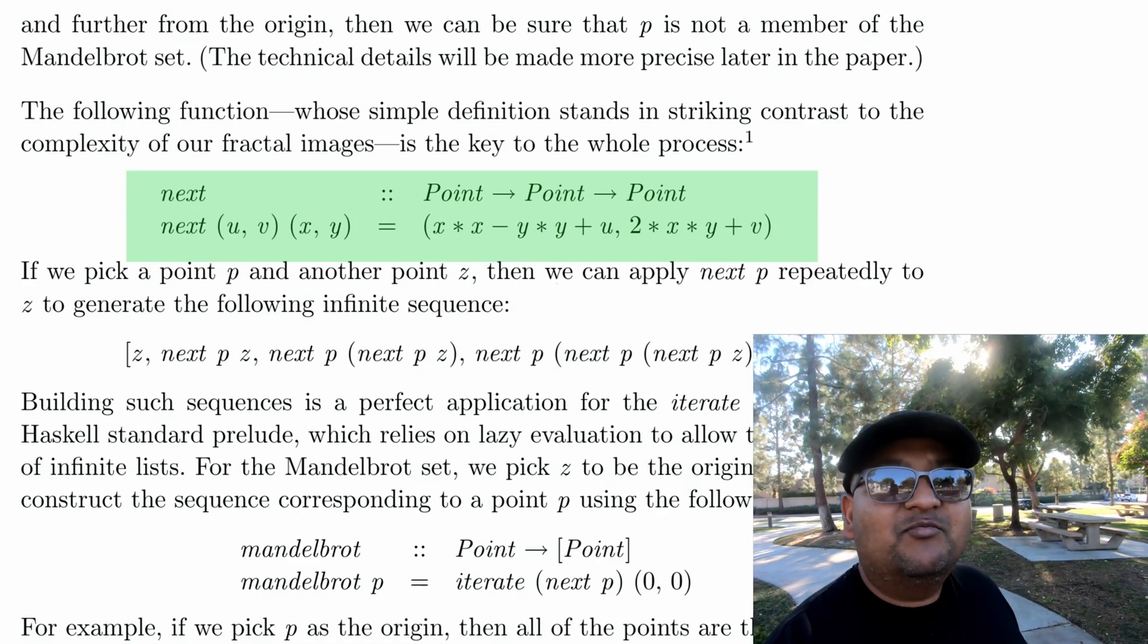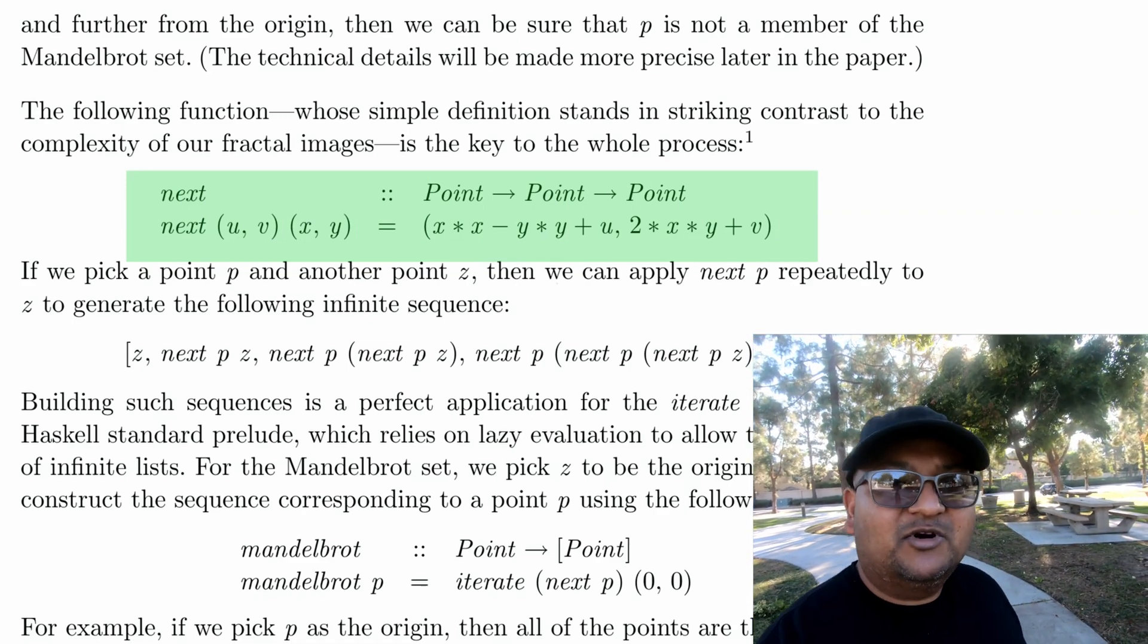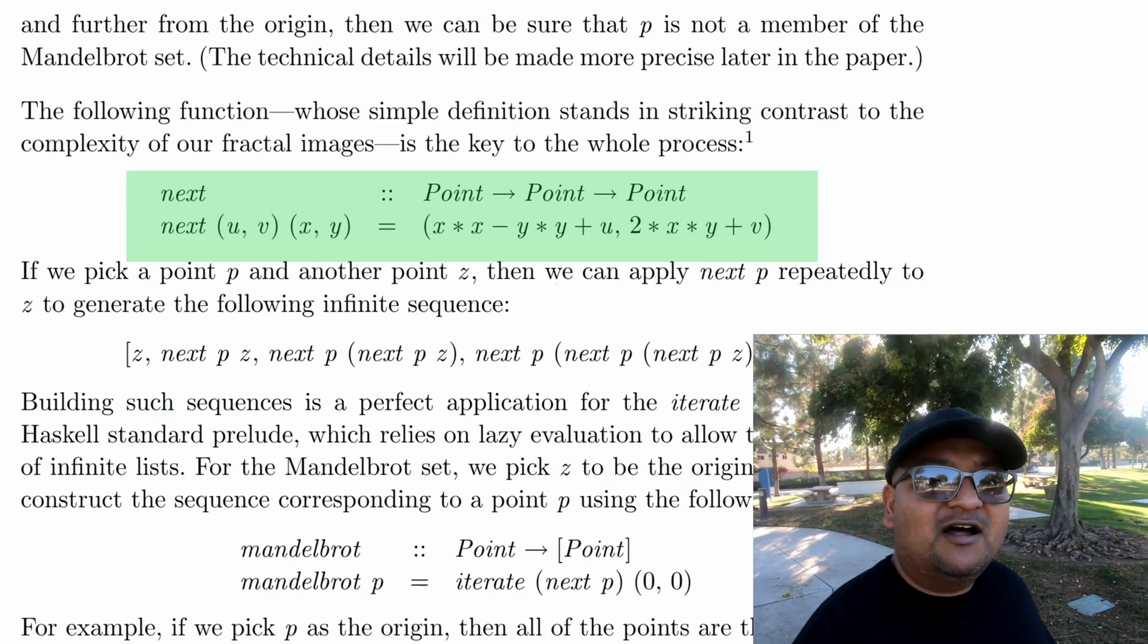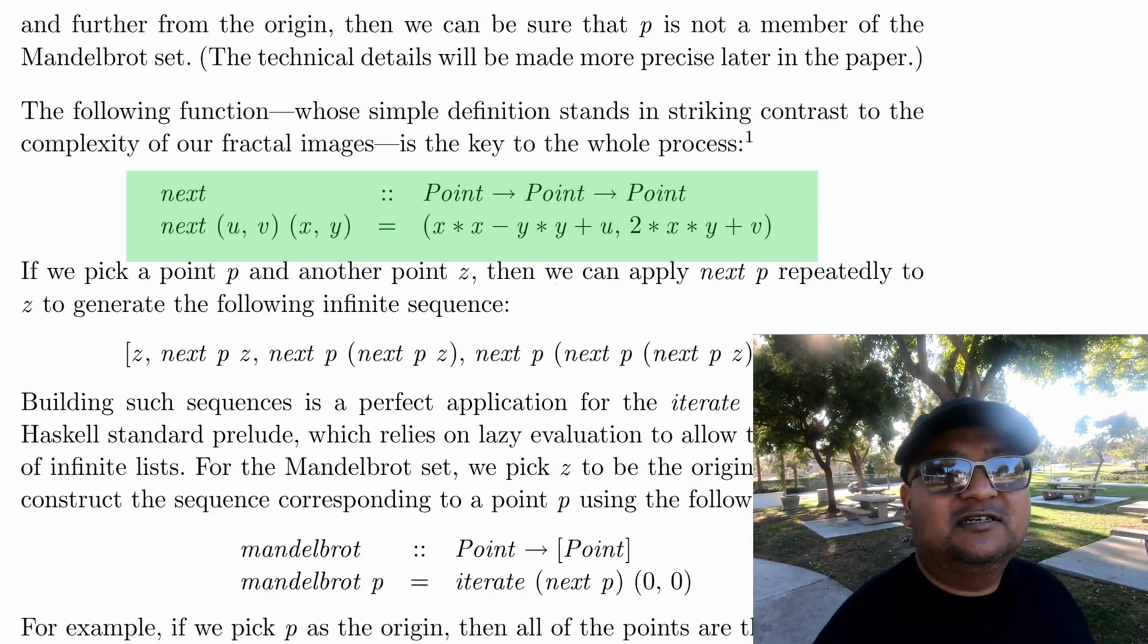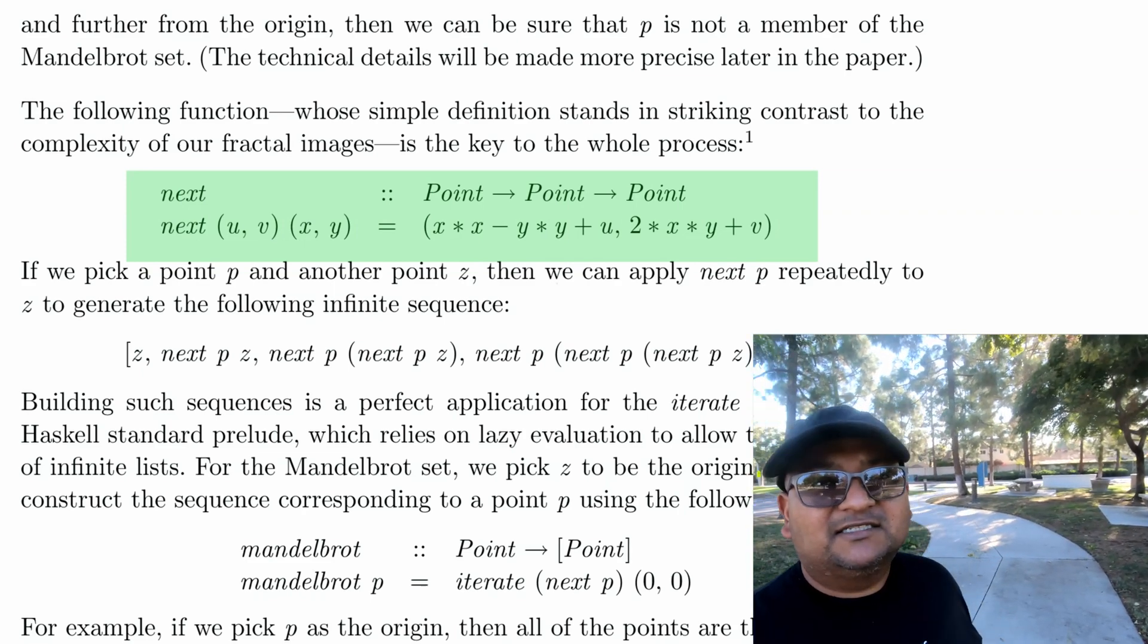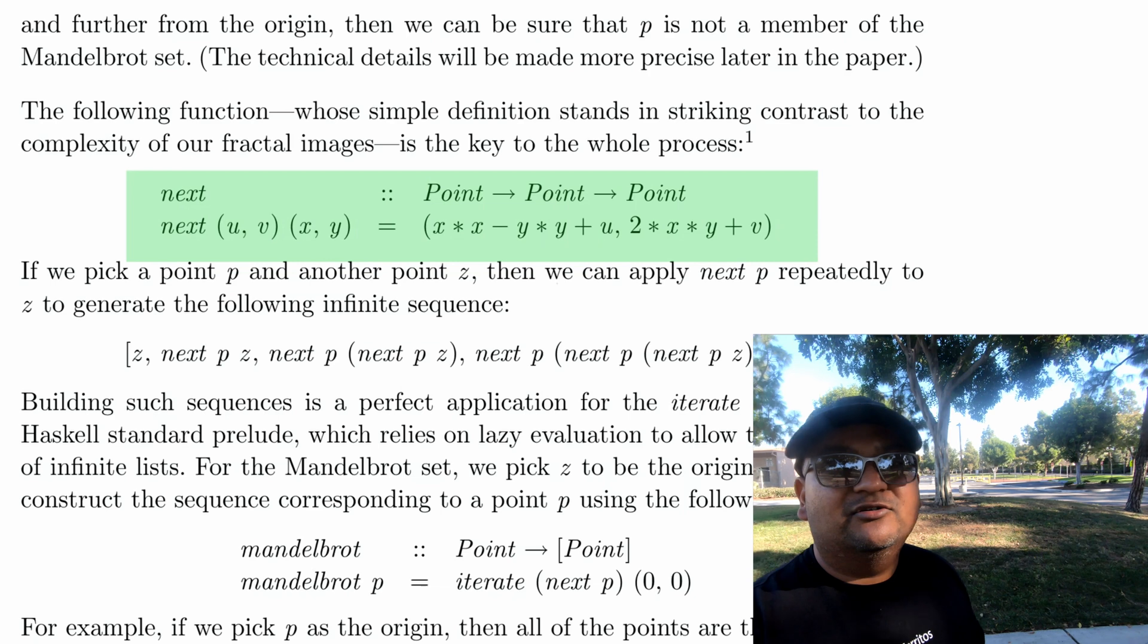And a point is in the Mandelbrot set if the sequence of numbers does not diverge. In other words, if the sequence of numbers stays somewhat close to the origin.